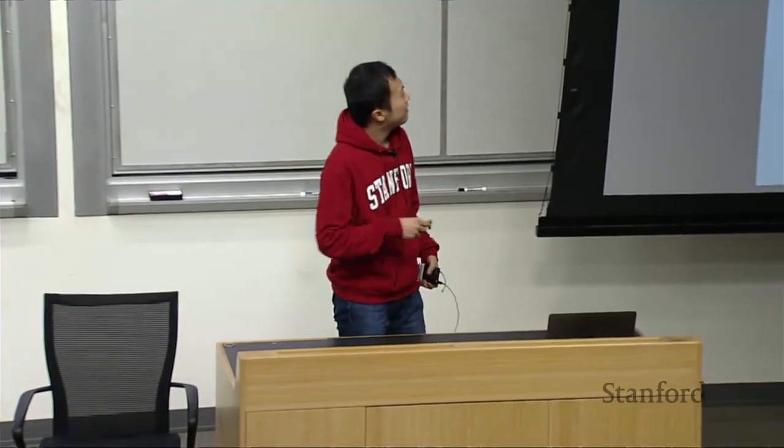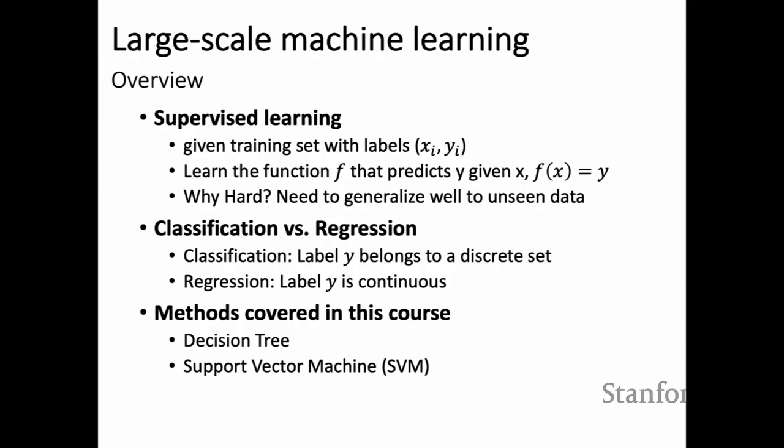Now it's machine learning time. In this class we mainly talked about supervised learning during lectures: you're given a set of data with features X and a label Y for each data point, and you try to learn a function that, given features, predicts the corresponding label. The challenge is the training set is limited but you want to generalize to unseen data. We also touched on large-scale unsupervised learning in homework four with k-means clustering. There are two types of tasks: classification, where the label belongs to a discrete set, and regression, where the label Y is continuous. We covered two methods: decision trees and support vector machines.